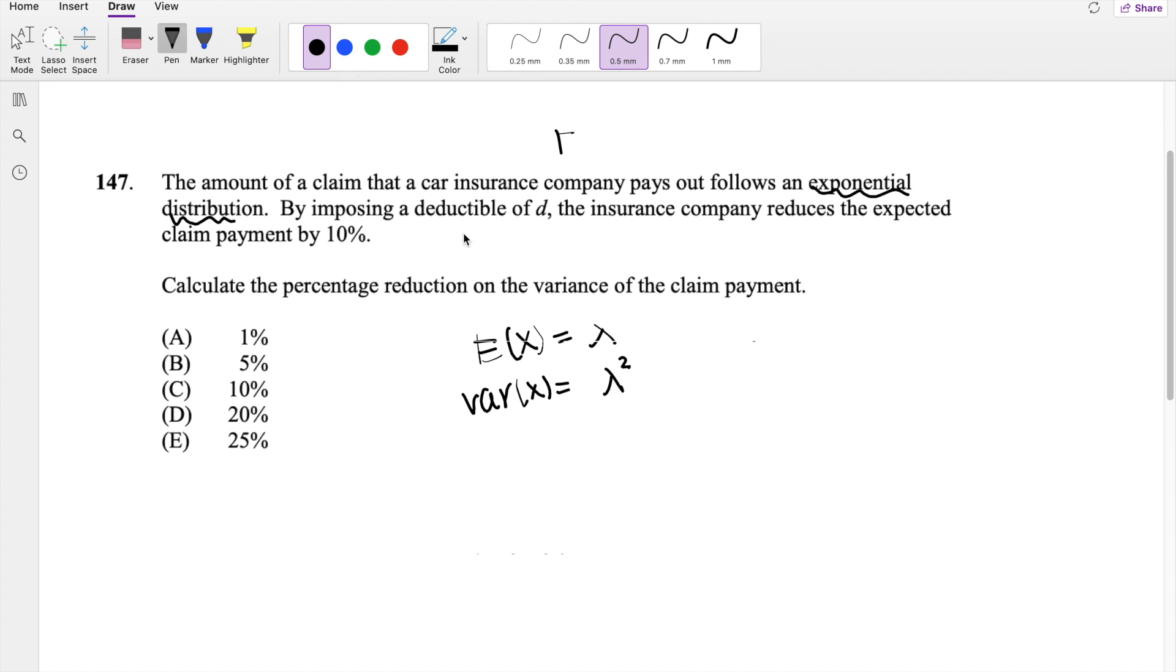Okay, anyways, by imposing a deductible d, the insurance company reduces the claim payment. I'm going to denote Y as claim payment. So they reduced claim payment, the expected payment by 10%. So if expectation of Y is equal to 0.1 times the expectation of X, that's basically what they're saying.